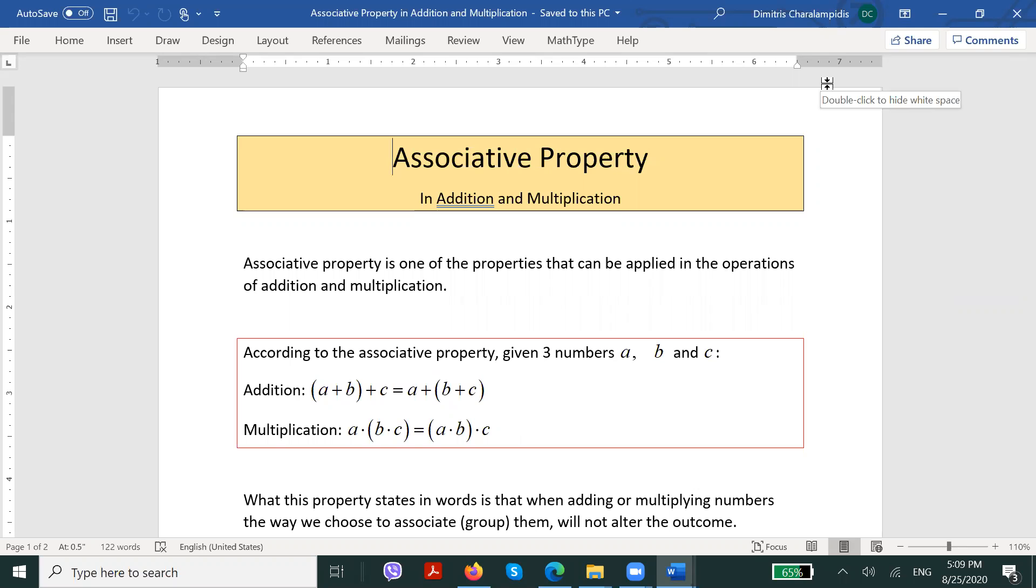According to the associative property, given three numbers a, b, and c, regarding addition we could write that (a+b)+c is equal to a+(b+c).